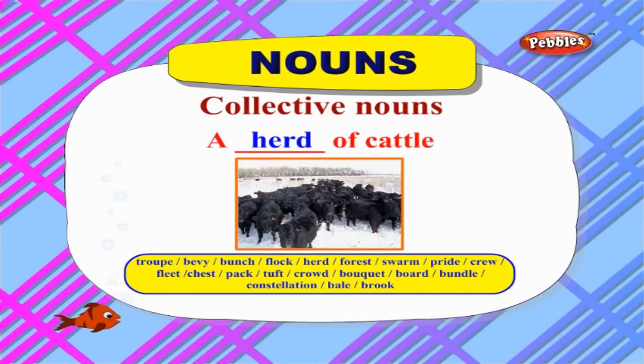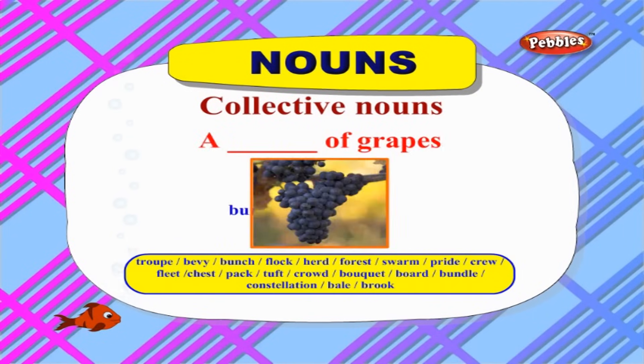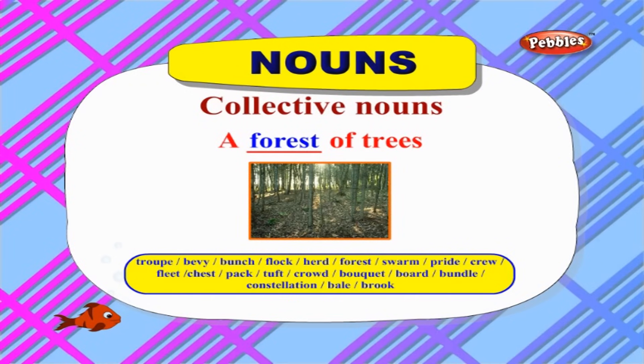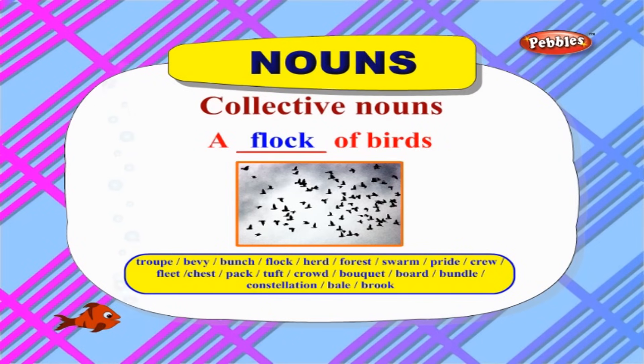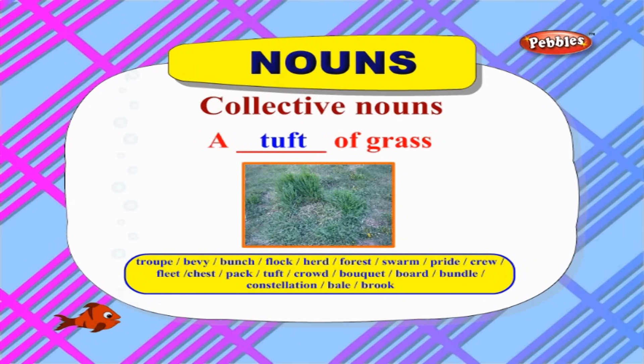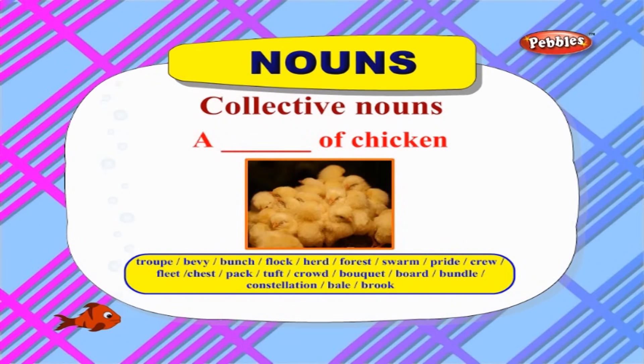Collective nouns are the names we use for a group of things or a collection of things. Let us see some examples: a herd of cattle, a bunch of grapes, a swarm of bees, a forest of trees, a flock of birds, a bale of cotton, a tuft of grass, a brood of chickens.